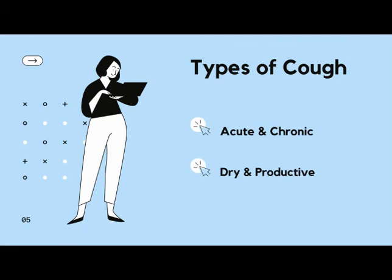Moving on to the types of cough — cough can be classified according to its duration and the presence of sputum. It may be acute if it lasts less than three weeks, or chronic if it lasts more than eight weeks. It may be unproductive or dry when there is no production of sputum, or productive when it is associated with the secretion of purulent or mucoid secretions, which is called sputum.